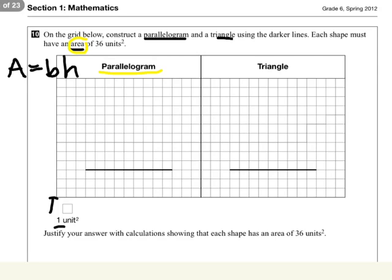So we can write it like this: bh, or you can write it as base times height, or you can write it in brackets. This also means multiply. All of those mean multiply. I'll just leave it like that.